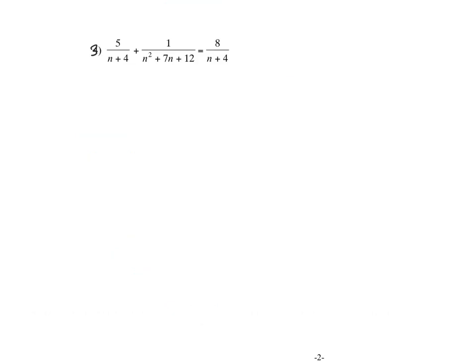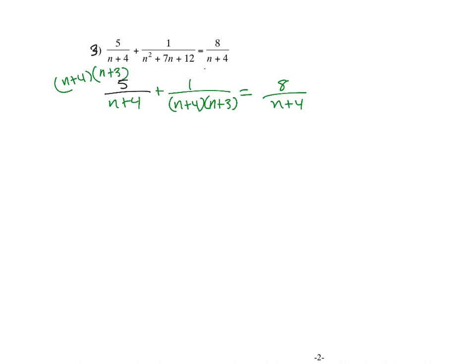For exercise 3, again I'm going to find my common denominator. So 5 divided by (n plus 4) plus 1. Factoring: (n plus 4)(n plus 3) equals 8 times (n plus 4). So that means my common denominator is (n plus 4)(n plus 3), and I multiply every term by (n plus 4)(n plus 3).